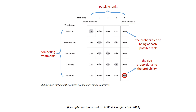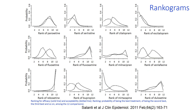A key strength of a network meta-analysis is that it can lead to a single coherent ranking of treatments. Probabilities for each treatment taking each possible rank can be presented in a table or in a rankogram. It is important to look at such rankograms rather than the naive ranking or the probability for each treatment of being the best before drawing conclusions, because the latter might be misleading.